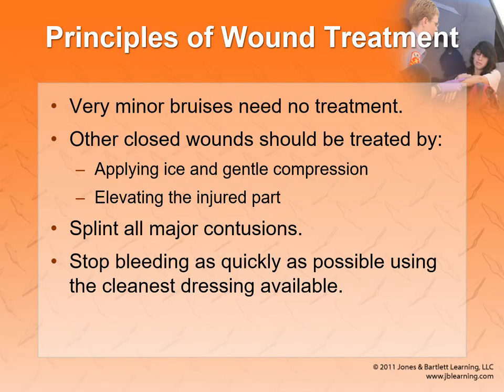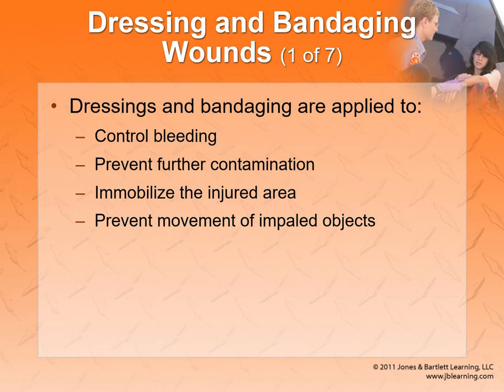For closed wounds, minor bruises don't need treatment. Ice and gentle compression make a difference, and elevating helps too. We want to splint all major contusions and bleeding, especially if in a limb, because there could be a fracture. Dressings and bandages control bleeding, prevent further contamination, immobilize the injured area, and prevent movement of impaled objects — we definitely have to dress all wounds.